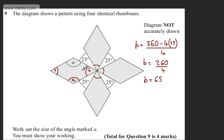If this is 65 degrees, this one will be as well. So we have angle A and A left. Angles in a quadrilateral add up to 360 degrees.